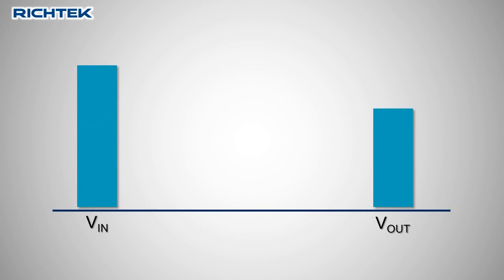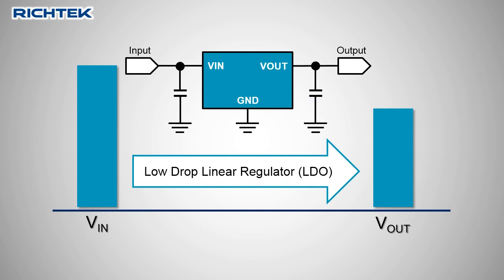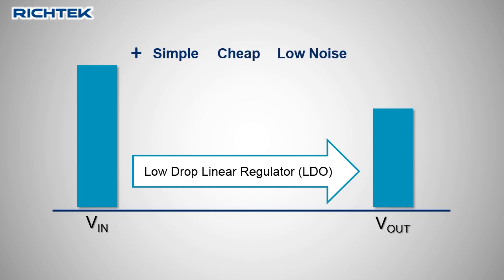If you need to drop a higher input voltage to a lower output voltage at relatively moderate power levels, you can use a low drop linear regulator. LDOs are simple, cheap, and provide a clean low noise supply. They can also react quickly to load transients.